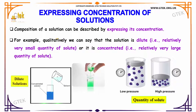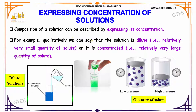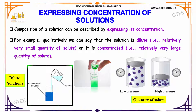Composition of a solution can be described by expressing its concentration. For example, qualitatively we can say that the solution is dilute — meaning a relatively very small quantity of solute — or it is concentrated, meaning a relatively very large quantity of solute.